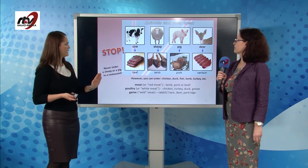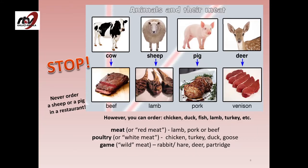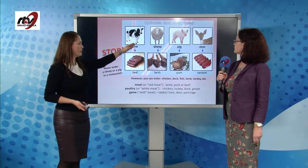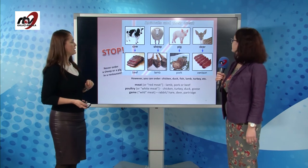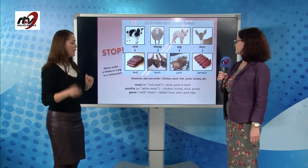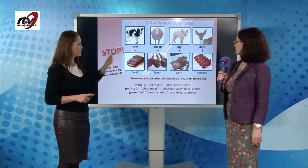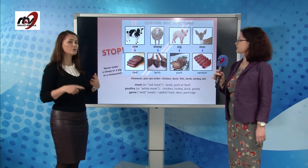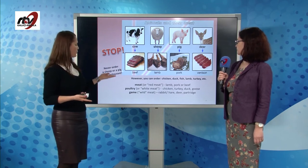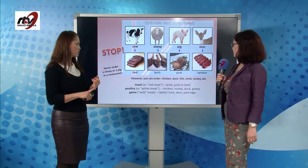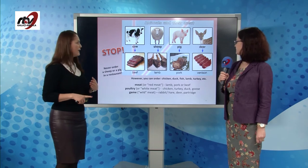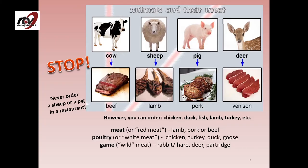Never order a sheep or a pig in a restaurant. So you buy a cow at the farm, but in a restaurant you order beef. You see the sheep but you eat lamb. It's the same with pig — you eat pork. Deer meat is called venison. Red meat is the one we get from the cow, the sheep, and the pig — lamb, pork and beef. We also have white meat: the one from birds, poultry — like chicken, turkey, duck, goose and so on. And if we go hunting, we have wild meat: rabbit, hare, deer or partridge.